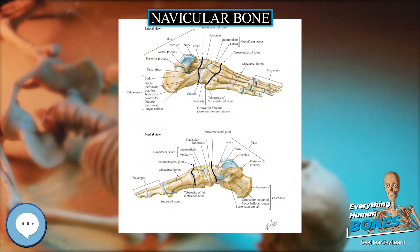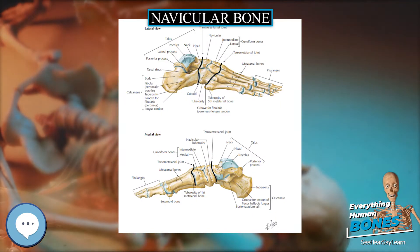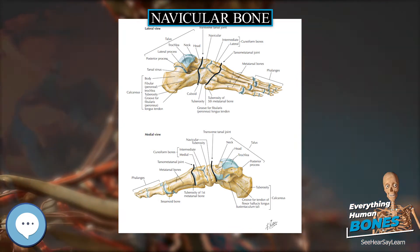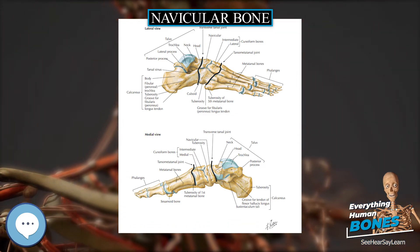An accessory navicular bone may be present in 2–14% of the general population.